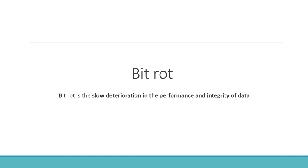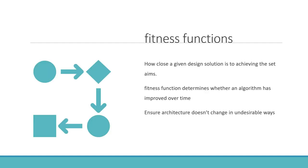Two important concepts relate to evolvability. The first is bit rot — the slow deterioration in performance and integrity of data over time. Any use case, however brilliant its architecture, will eventually see degraded performance or data integrity. The second is fitness functions, which are metrics that define the correctness of our architecture — they measure how close a given design or solution is to achieving what it was supposed to achieve.